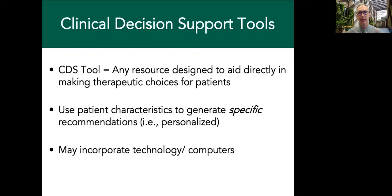One way to overcome this is by using clinical decision support tools. The definition here is: any resource designed to aid directly in making therapeutic choices for patients. Most of the time, these use individual patient-level characteristics to generate specific recommendations. This is kind of the foundation of personalized medicine, personalized rehabilitation — basing decisions in an evidence-based manner on individual characteristics of the patients. Lots of times, these incorporate technology or computers.